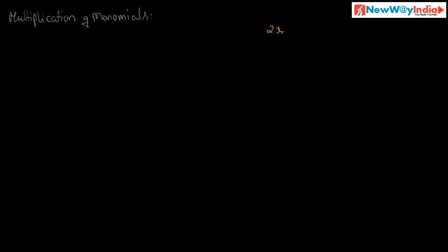For example: 2x is a monomial — it is a single term. Minus 2y is a monomial. x divided by y is a monomial. x squared y squared is a monomial. p is a monomial. ab is a monomial. Minus 3 is a monomial. Minus 4x squared is a monomial. These are the different types of monomials — an algebraic expression with only one term.